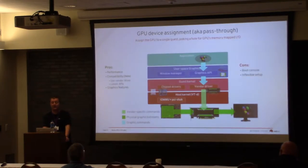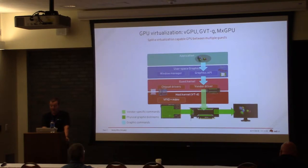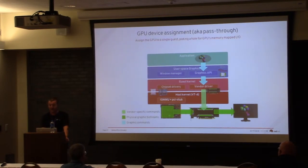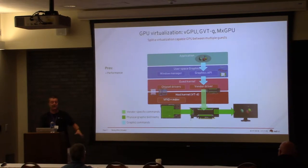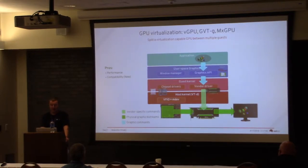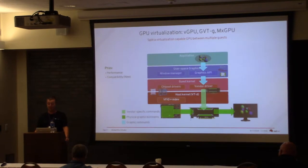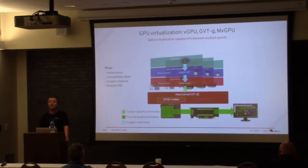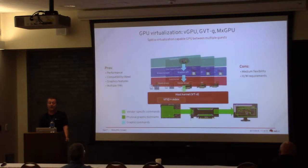The next step is the vGPU case — we split a GPU between multiple VMs, using a GPU that knows how to be split and knows how to support virtualization. We get similar compatibility benefits as before, but you get multiple VMs — that's the big benefit. The cons are that you still don't have much flexibility, the hardware requirements are high because you need a lot of extra GPU power split across machines, and in general it's done in a static way. Migration and features like that are still problems.